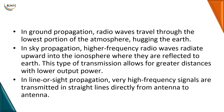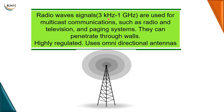Radio waves have a frequency spectrum of 3 kilohertz to 1 gigahertz. They are basically used for multicast communication — where a signal is sent from one device to many — such as radio, television, and paging systems. Radio waves can penetrate walls, are highly regulated, and use omni-directional antennas that send signals out in all directions.